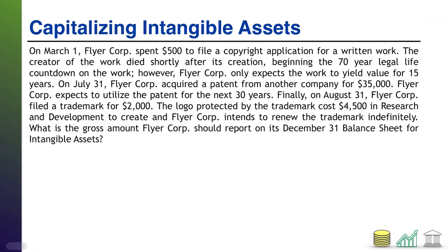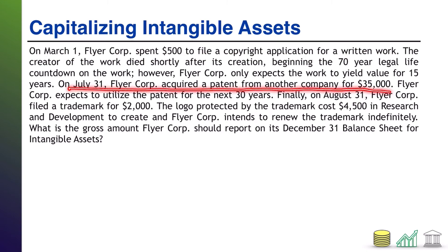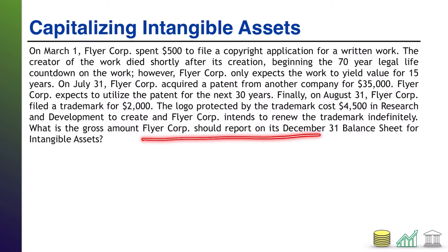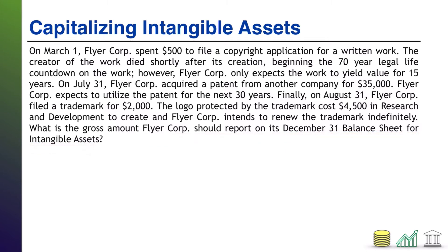Let's do another one — this one involving a little math, but still the same concept. On March 1st, FlyerCore spent $500 to file a copyright application for written work. On July 31st, FlyerCore acquired a patent from another company with a price tag. On August 31st, FlyerCore filed a trademark for $2,000, and the logo protected by that trademark cost $4,500 in R&D to create. The question is: of this information, how much in total should FlyerCore report on its balance sheet for intangible assets? Take a moment, pause the video, read through the information in detail, and see if you can come up with that sum total.